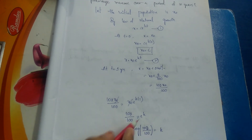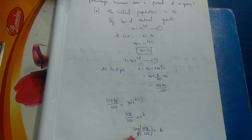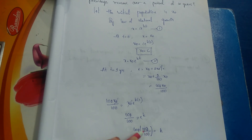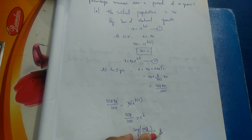Removing the exponential by taking the logarithm, we get k = log(102/100). This is the k value.